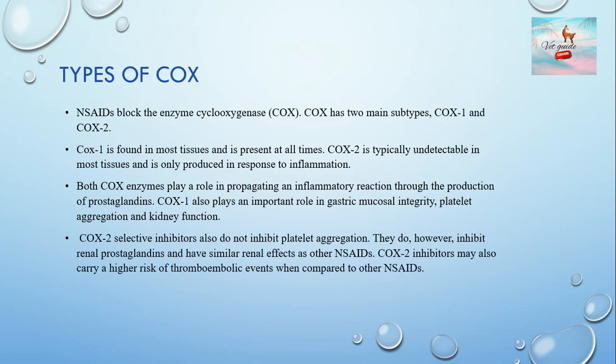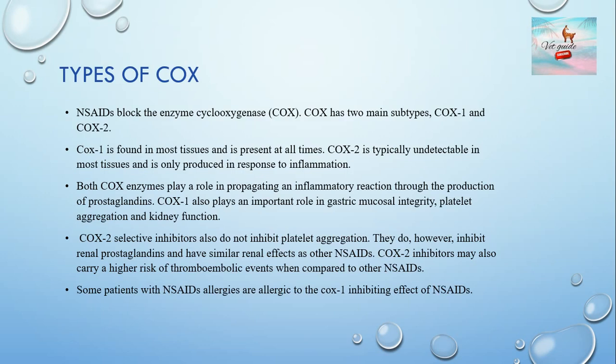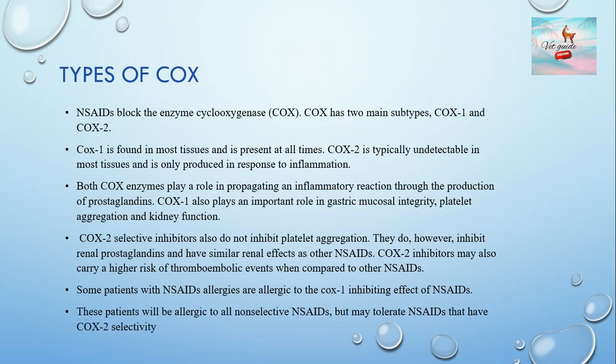Cyclooxygenase 2 selective inhibitors do not inhibit platelet aggregation. They do, however, inhibit renal prostaglandin and have similar renal effects as other NSAIDs. COX-2 inhibitors may also carry a higher risk of thromboembolic events. Some patients with NSAID allergies are allergic to the COX-1 inhibiting effect; these patients may tolerate NSAIDs with COX-2 selectivity.